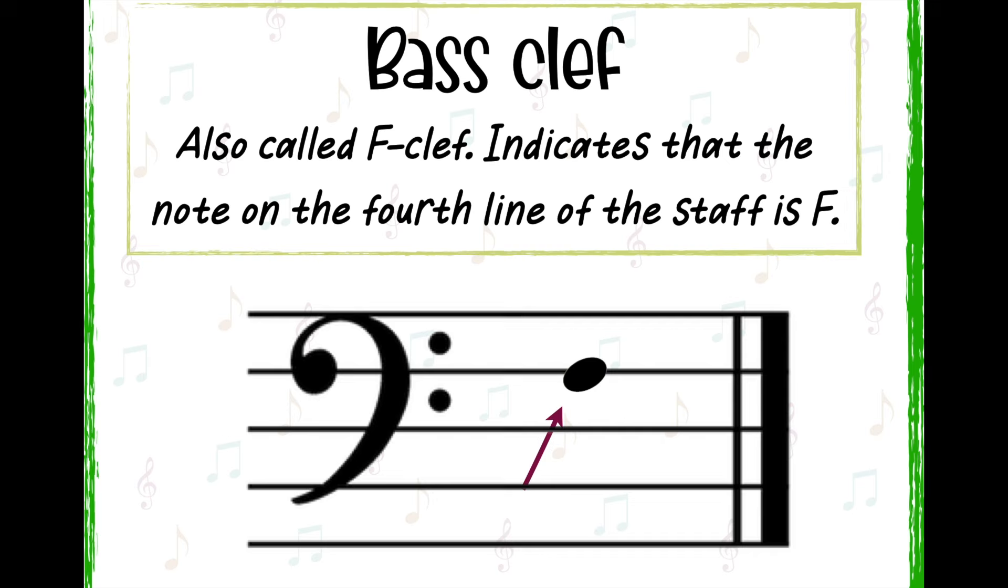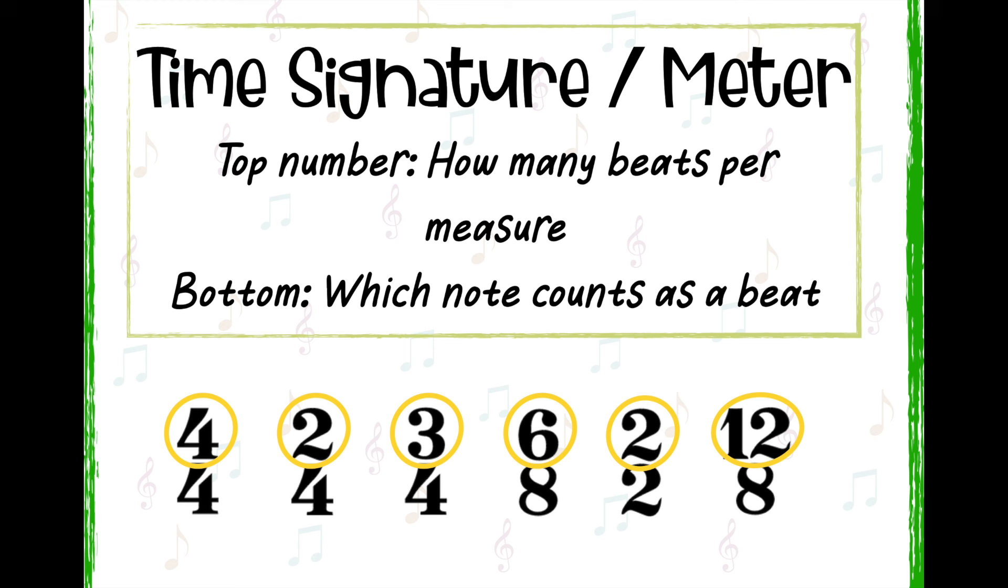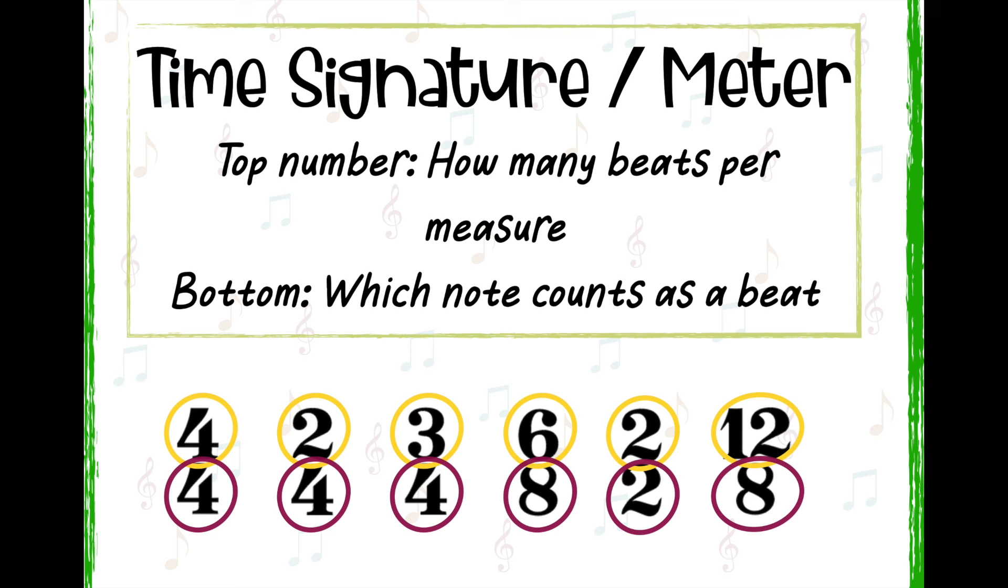A time signature is indicated at the beginning of a piece of music and consists of two numbers. It looks a little bit like a fraction, although there is no line written between the numbers. A time signature tells the musician how to group musical notes into measures. The top number represents the number of beats or pulses that the measure contains. The bottom number tells us which note we should count as a beat.